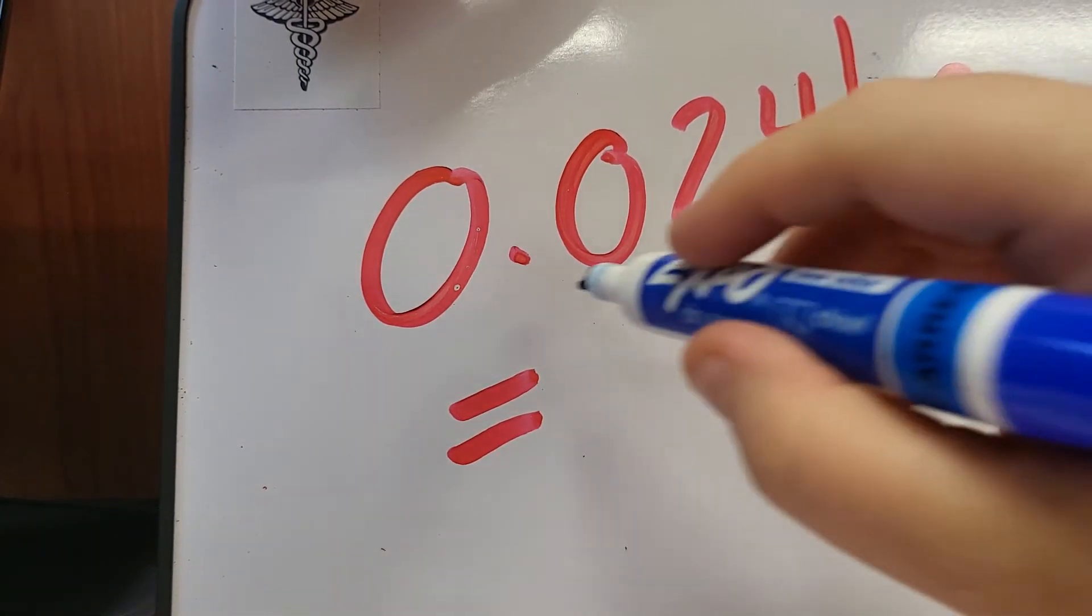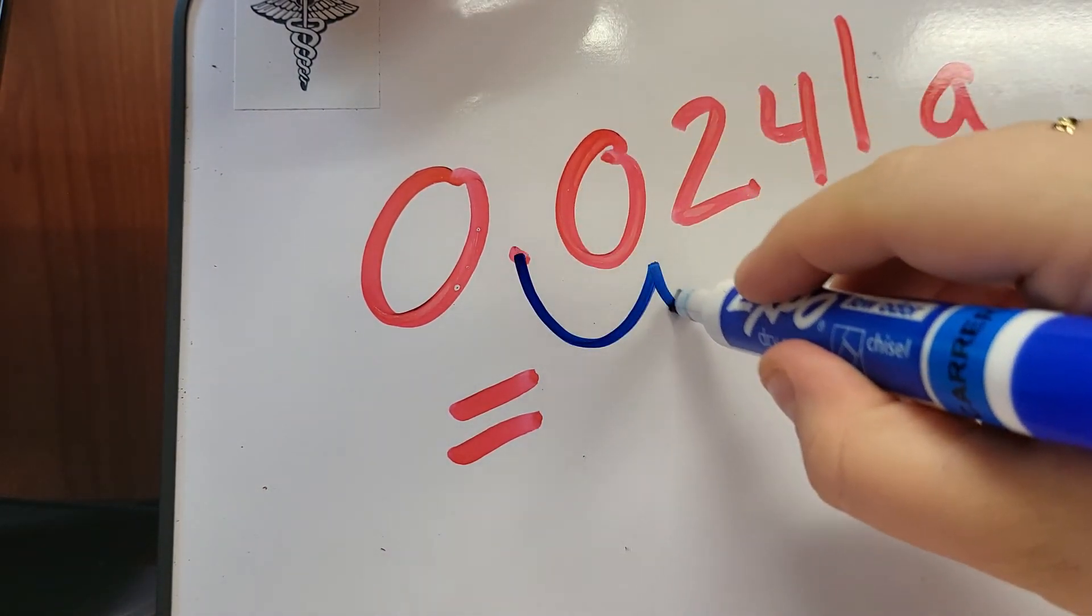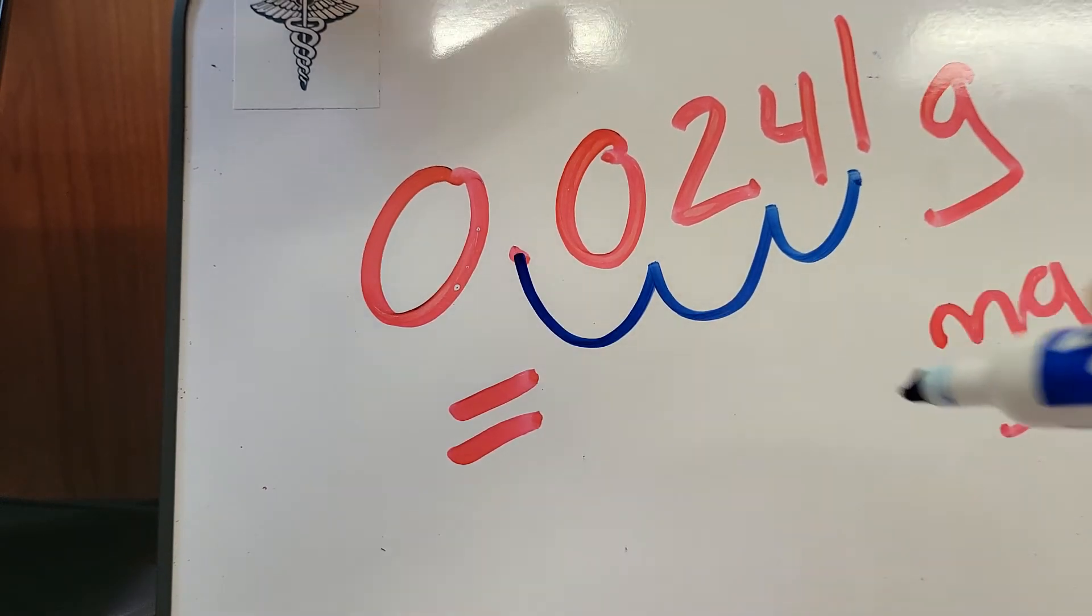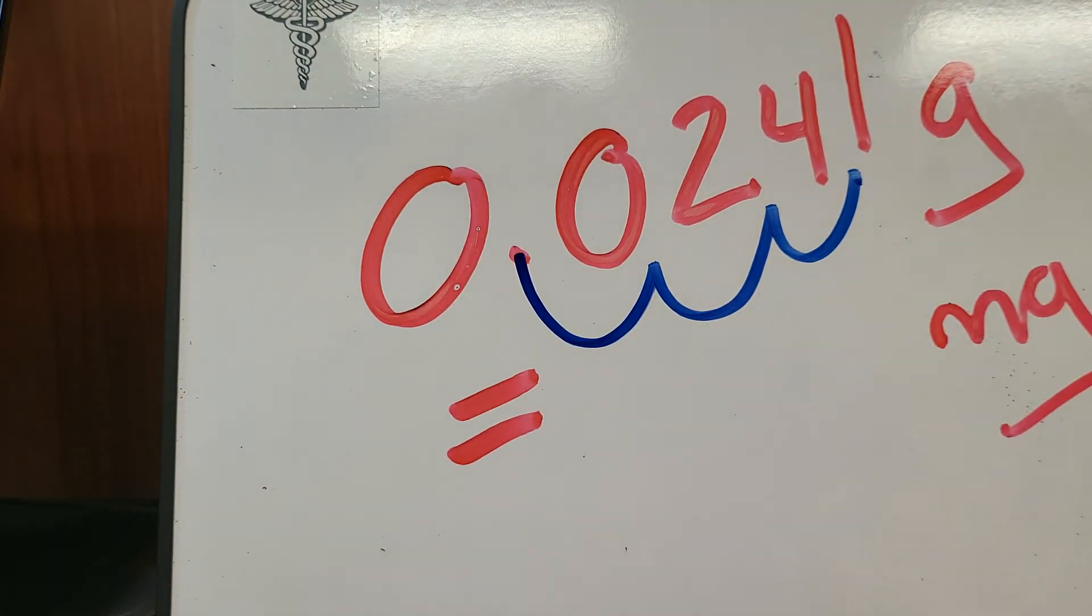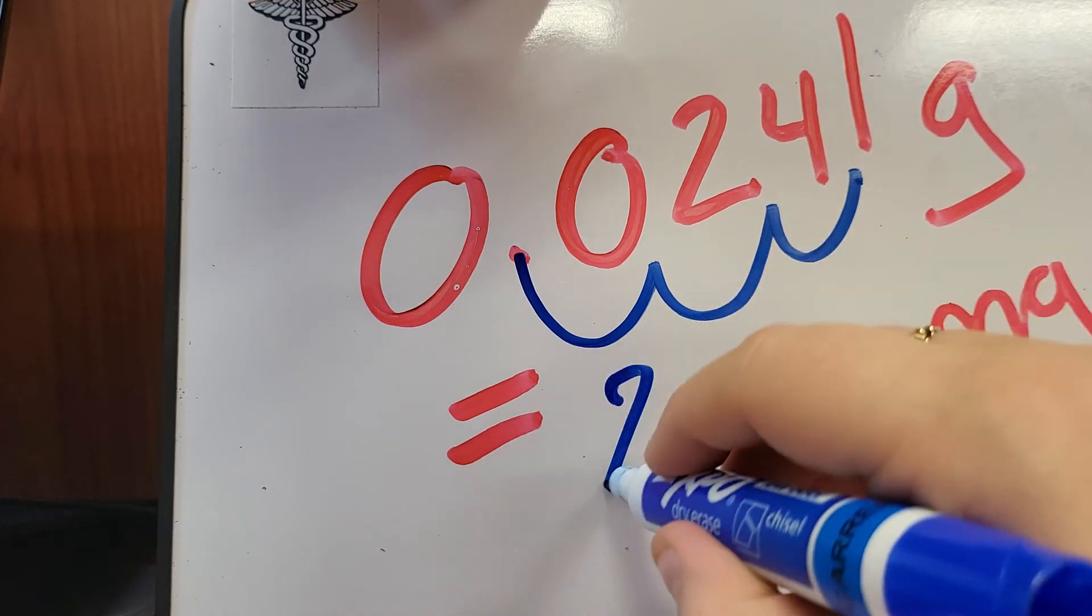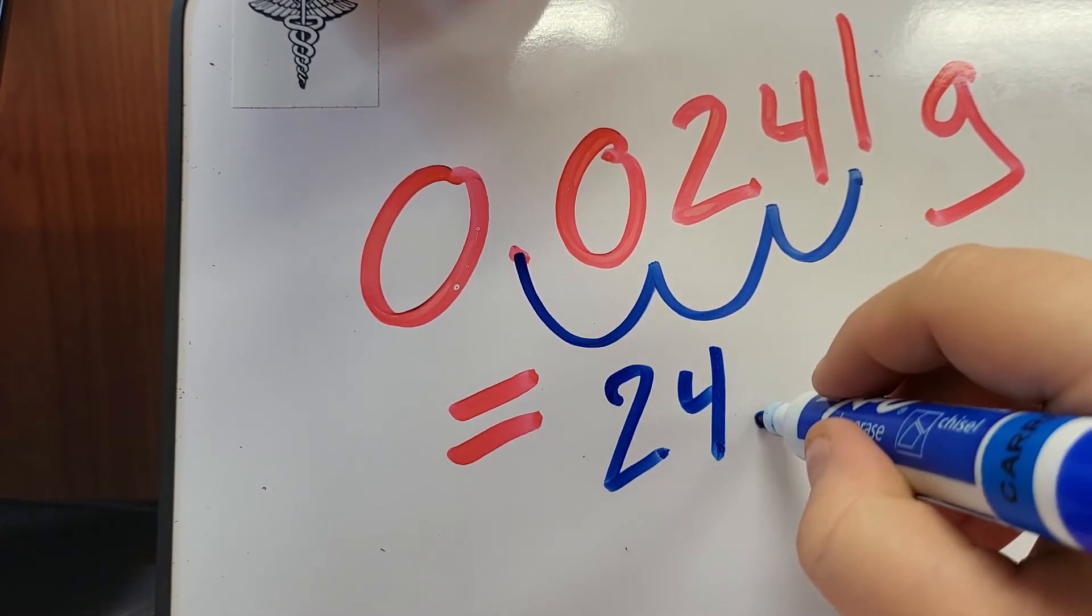Okay, so what we're going to do is we're going to take 1, 2, 3. What does that equal? Well, that's going to equal 24.1.